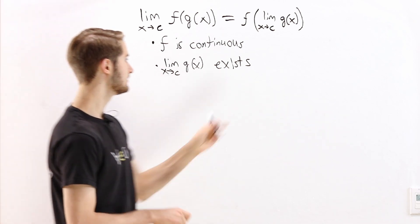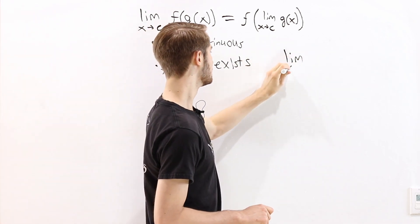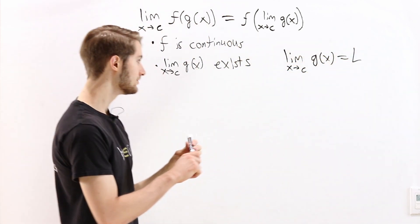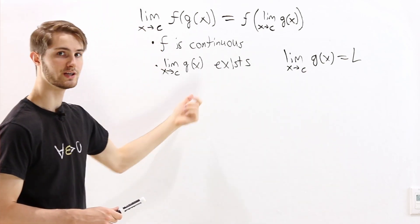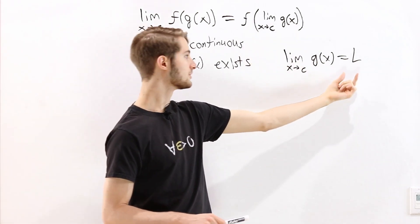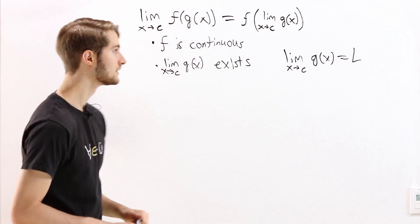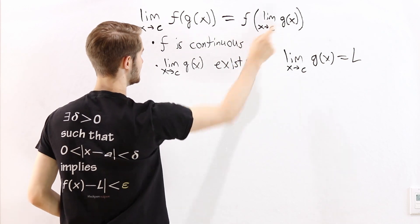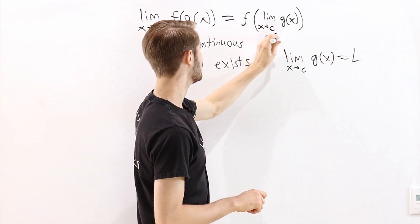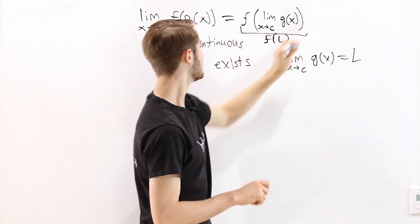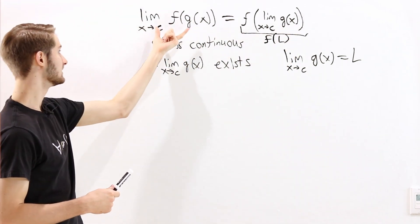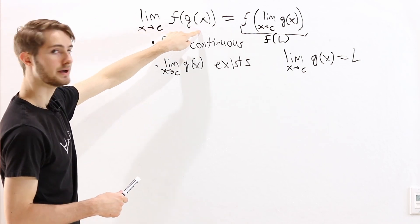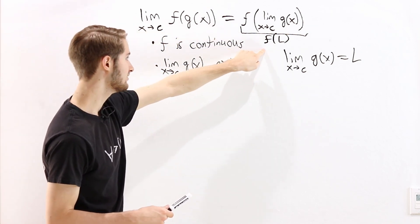Let's say that the limit as x approaches c of g of x equals L. We know that this limit exists — we assumed that at the beginning — so it has to equal something, and we're going to call that limit L. So if we look at the right side, f of the limit of g of x, this is going to be f of L. Our goal now is to take the left side — the limit as x approaches c of f of g of x — and prove that that equals f of L.